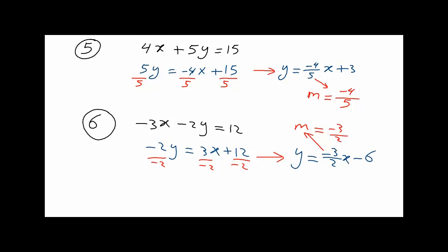Looking at the slopes from examples 5 and 6: they are not equal, so these two lines are not parallel. Also, one is not equal to the negative reciprocal of the other, so they are not perpendicular either. The situation here is neither — the lines are neither parallel nor perpendicular.